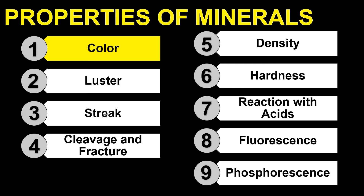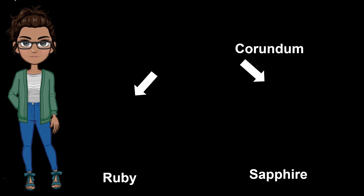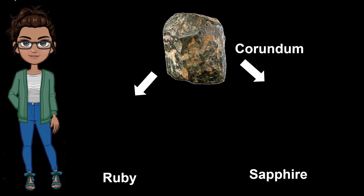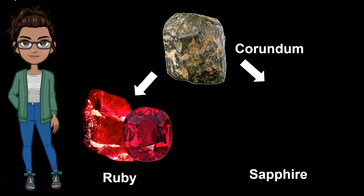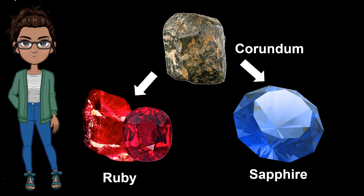Let's start with color. The property of mineral that can easily be observed is its color. We learned that color is the result of the reflection of visible light. Color is a useful property of minerals. Corundum, a colorless mineral, is composed of aluminum and oxygen atoms. Corundum that contains traces of chromium forms a red gem called ruby. Another type of corundum is sapphire, a blue-colored gem as a result of traces of iron and titanium. However, color alone may not be sufficient in identifying minerals since some minerals may have almost the same color, though they differ in their chemical structures.